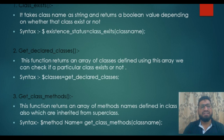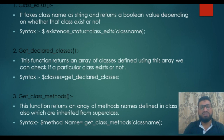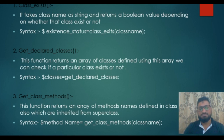The second function is get_declared_classes. This function returns an array of classes defined in the program. Using this array, we can check if a particular class exists or not. The syntax is: $classes = get_declared_classes(). This function will show you all the different classes that are declared.